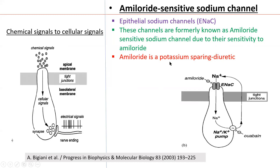Amiloride is a potassium-sparing diuretic. In the physiology of taste, we have discussed salt. When salt is put on the tongue or in our mouth, sodium enters into the cell through this channel — the epithelial sodium channel — and causes depolarization of the cell. They then release neurotransmitter and information goes to the cerebral cortex for taste perception.